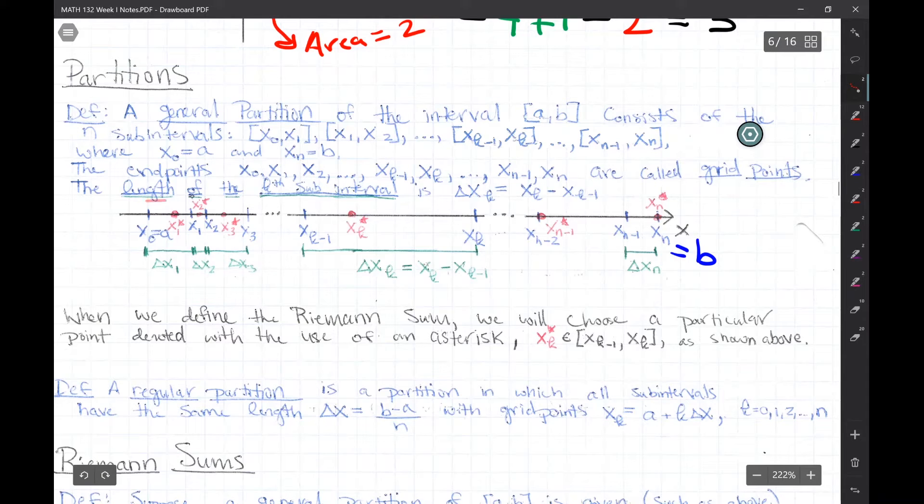The length of the kth sub-interval, and the kth sub-interval is the one that starts at k minus 1 and goes to k, so this first one here is the first sub-interval. And its length is xk minus xk minus 1, just the length of the interval.